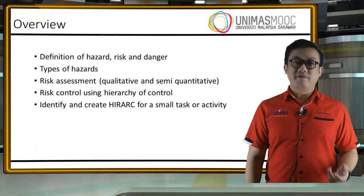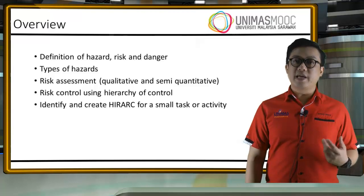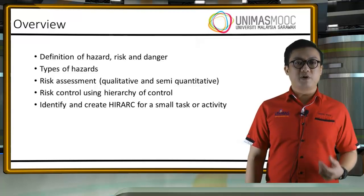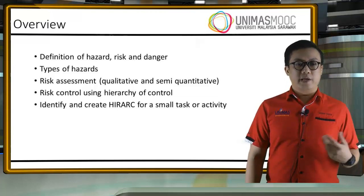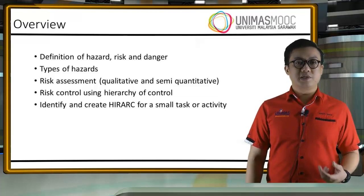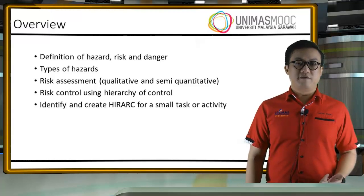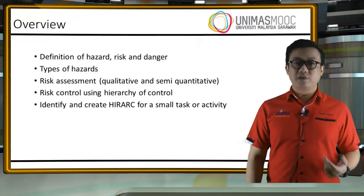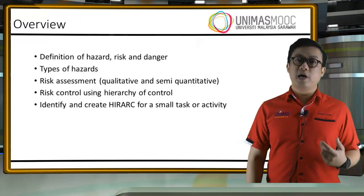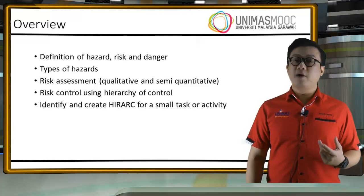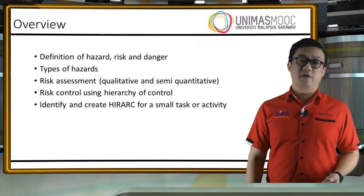In this unit, we will define what is hazard, risk, and danger. We will also go into the different types of hazards out there. Then we will go into risk assessment such as the qualitative, quantitative, and semi-quantitative risk assessment. Next, we will follow with risk control using hierarchy of control. And finally, we will identify and create a HIRAC for a small task or activity.